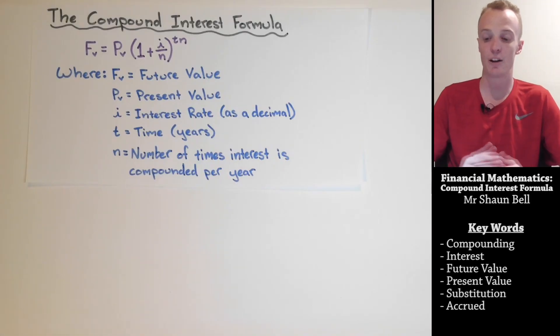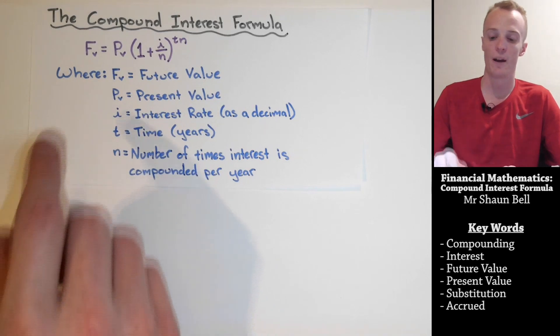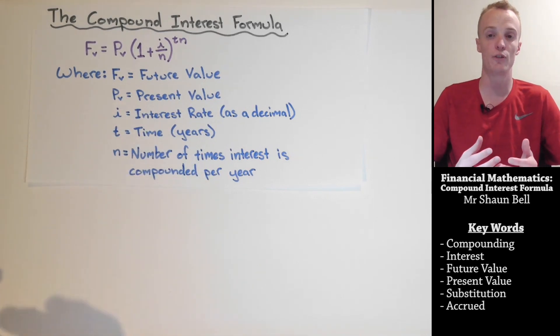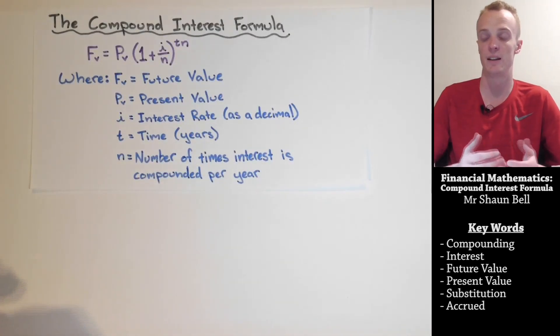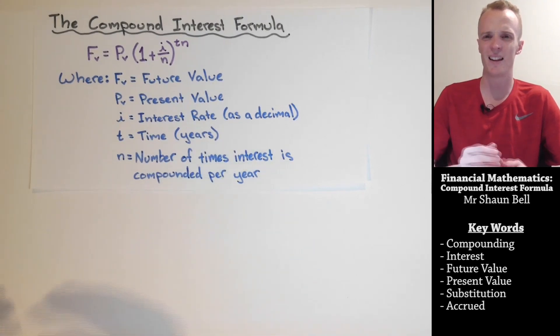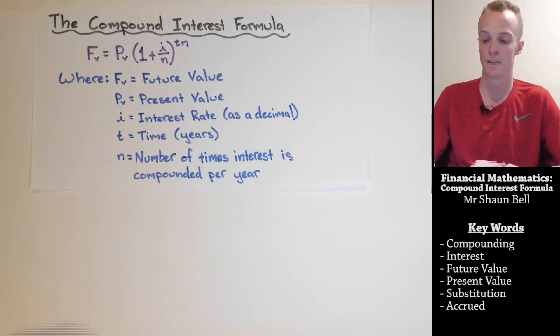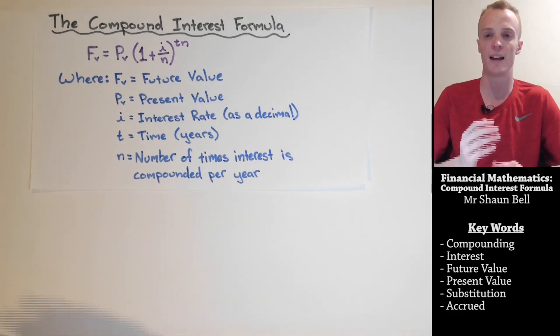Here in front of me now is the compound interest formula where FV is the future value or the final value that you'll have. The PV is the present value or the amount that you've either borrowed or invested. The i is the interest rate and we always represent this as a decimal. The t is the time and we always represent this in years. And the n is something that's new to us from the simple interest formula as the number of times the interest is compounded each year.